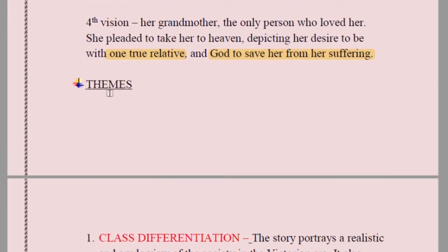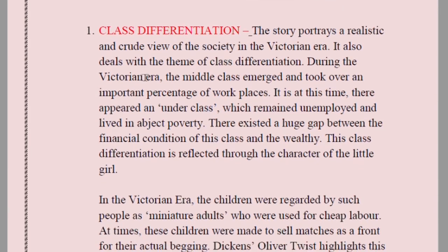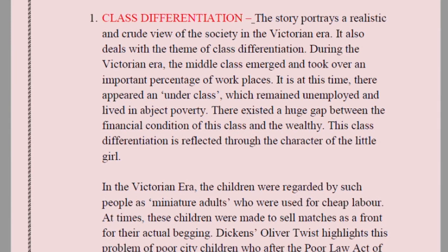Next we move on to themes — another significant part. First theme: class differentiation. The story portrays a realistic and crude view of society in the Victorian era. We repeatedly see this difference between the higher class and lower class, where the underclass is constantly deprived of food and basic necessities. During the Victorian era, the middle class emerged and took over important workplaces.